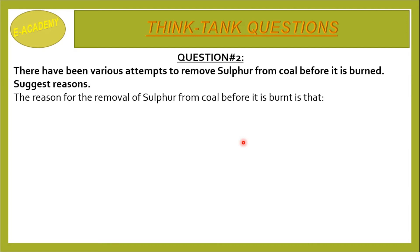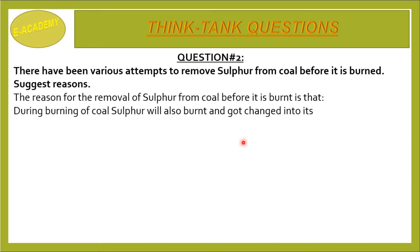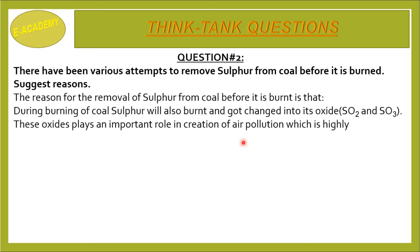The reason for the removal of sulfur from coal before it is burnt is that during burning of coal, sulfur will burn and get changed into its oxides SO2 and SO3. These oxides play an important role in the creation of air pollution, which is highly toxic and affects the life of living organisms.